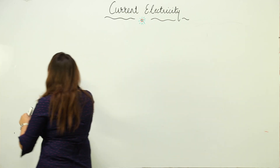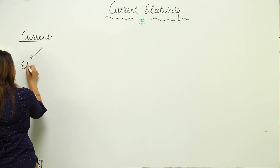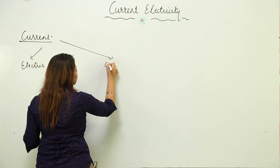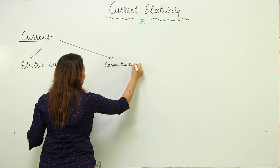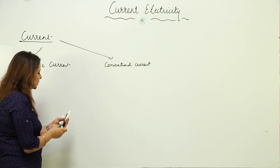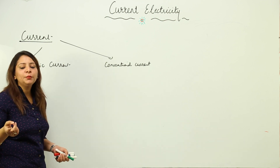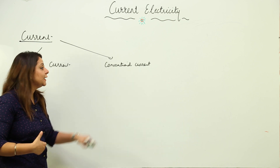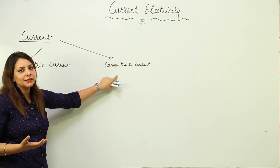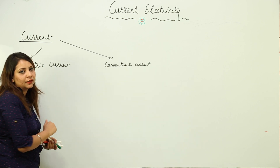We are going to start with current. We have two types of currents: one is the electric current and the other is the conventional current. In earlier times, when we were lacking in scientific knowledge, people used to consider that the current we are actually using is the conventional current. But nowadays, we know that the current which is of practical use — the one we get at home — is electric current.